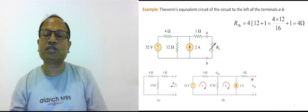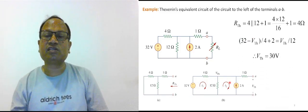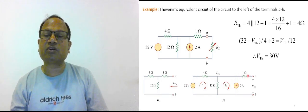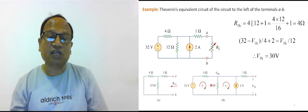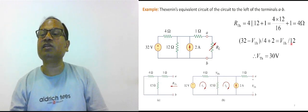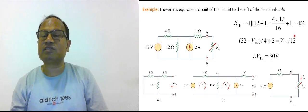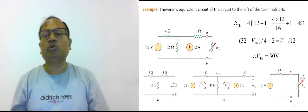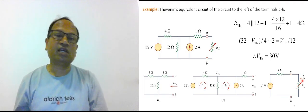For the Thevenin voltage, that is the open circuit voltage — since no current flows through the 1 ohm resistor, the voltage there is zero drop. Assuming current I1 and I2, we can write: (32 − Vth) / 4 = I1, and I1 + 2 = Vth / 12. Solving these gives Thevenin voltage as 30 volts. The final equivalent circuit is 30 volts in series with 4 ohms, to which you connect the load. You can then calculate load current, load voltage, or load power from this Thevenin equivalent.